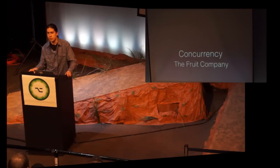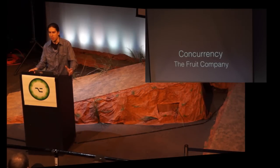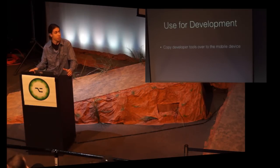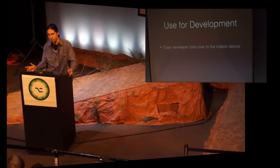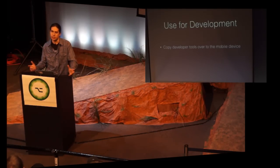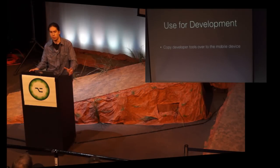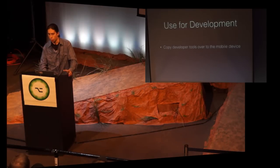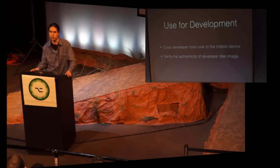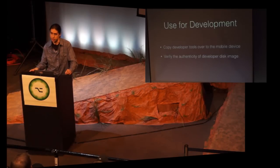Our second example is about concurrency, and this one comes from the fruit company across the street. If you've done iOS development, you've probably seen the button that says 'Use for Development.' When you connect an iOS device, it asks that device what version it's running, then pulls and finds the right developer tools, and copies those over to the device. It also sends over the path to where this file is being stored. It then sends over a disk image of the developer tools along with a signature to verify it, opens up that file, verifies it against the packaged signature, and makes sure we're not mounting something we shouldn't.